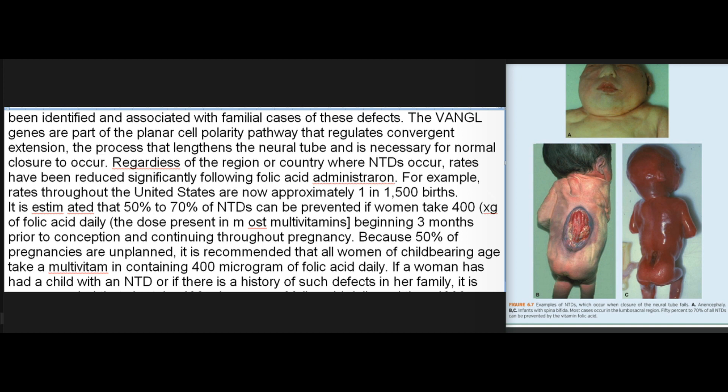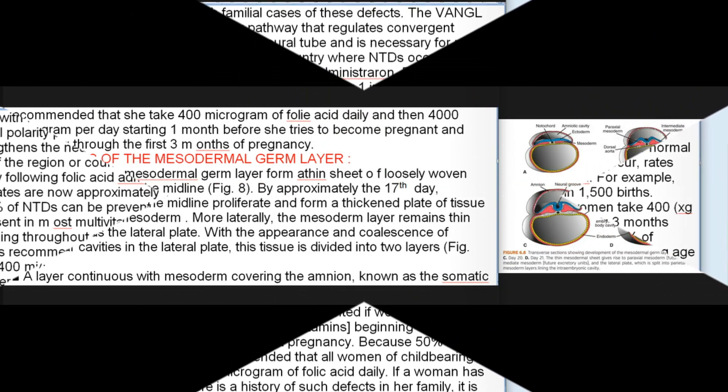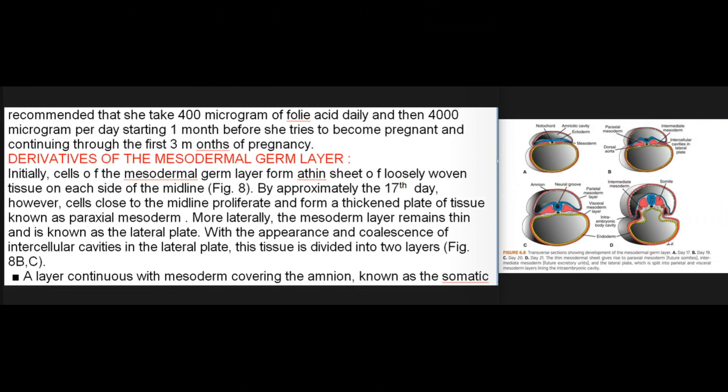Because 50% of pregnancies are unplanned, it is recommended that all women of childbearing age take a multivitamin containing 400 micrograms of folic acid daily. If a woman has had a child with an NTD or if there is a family history of such defects, it is recommended that she take 400 micrograms of folic acid daily and then 4000 micrograms per day starting one month before she tries to become pregnant and continuing through the first 3 months of pregnancy.